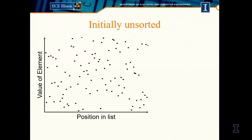We can visualize a sorting algorithm with a graph. The horizontal axis shows the position in the list — the left side is the first object, the right side is the last. Vertically, we represent the value: the smallest element is at the bottom, and bigger items go higher. For a sorted list, we want a line that increases monotonically — as position increases, the value always gets bigger, producing a diagonal line going upward.